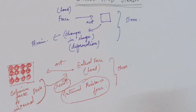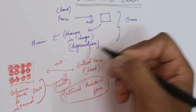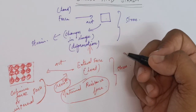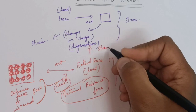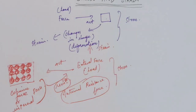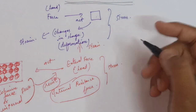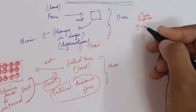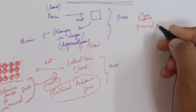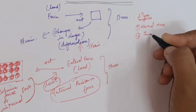Once the stress exceeds the limit and produces a change in deformation or change in shape, that deformation of an object is called strain. Normally, there are two types of stresses: one is normal stress and the second one is shear stress.